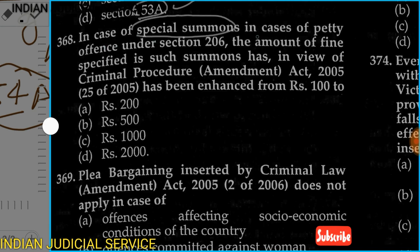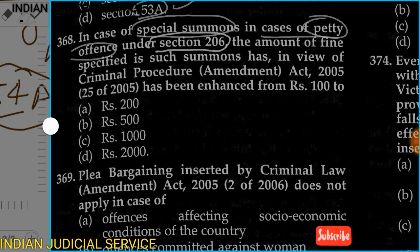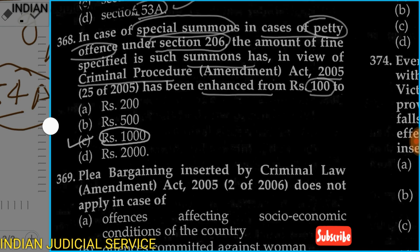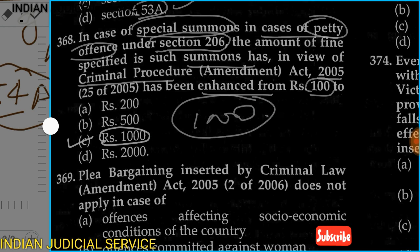Question 368: In the case of a special summons in case of petty offenses under Section 206, the amount of fine specified in such summons, in view of the Criminal Procedure Amendment Act 2005, has been enhanced to — Option C: 1,000 rupees. The definition of petty cases under Section 206 is that they deal with amounts below 100 rupees, but after this amendment the amount was increased to 1,000 rupees. So Option C is correct.